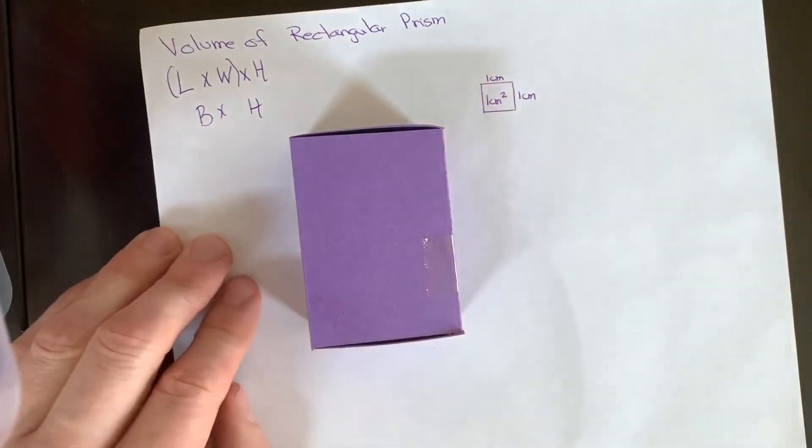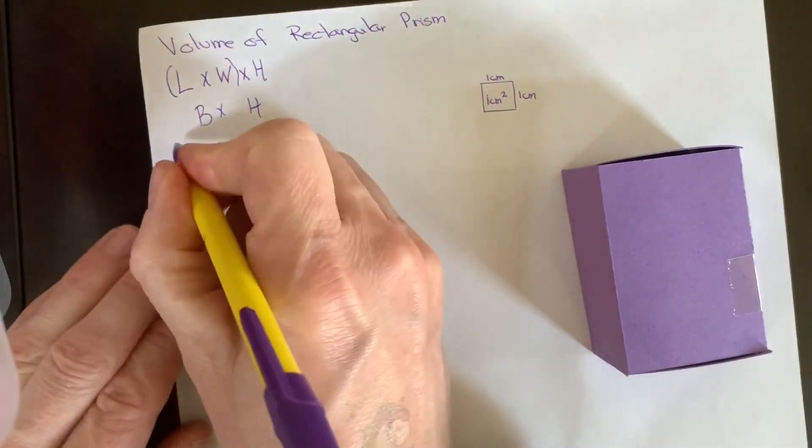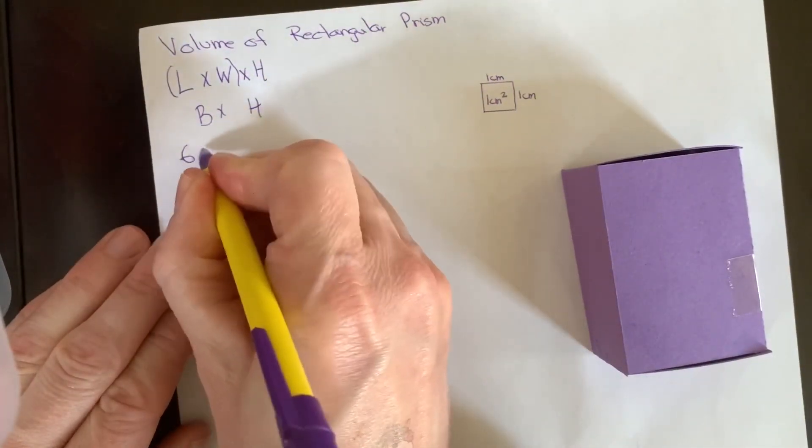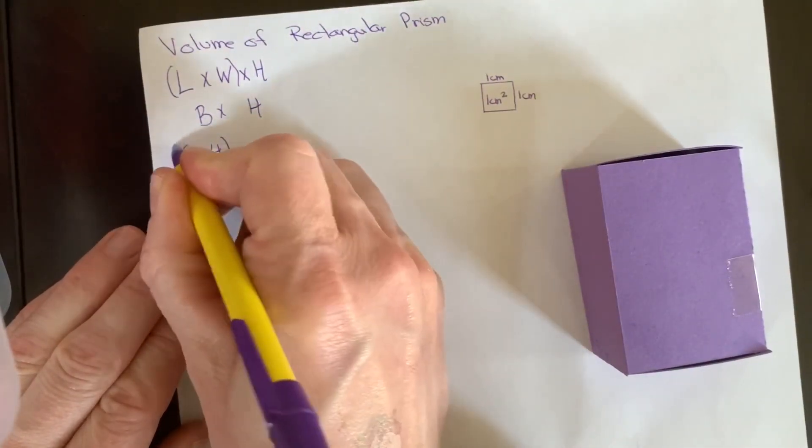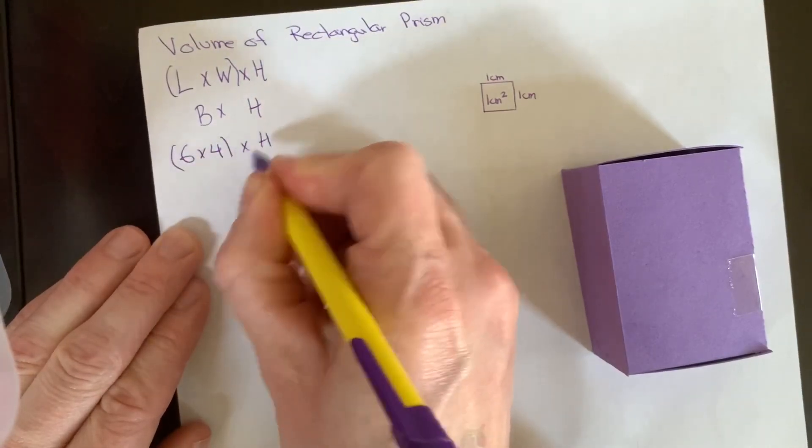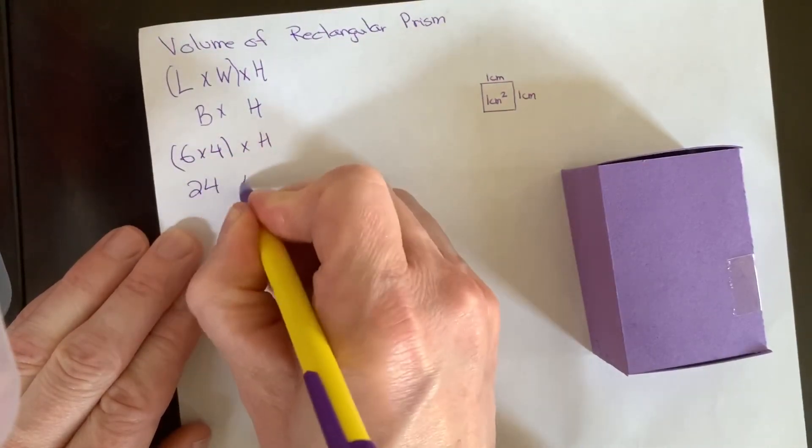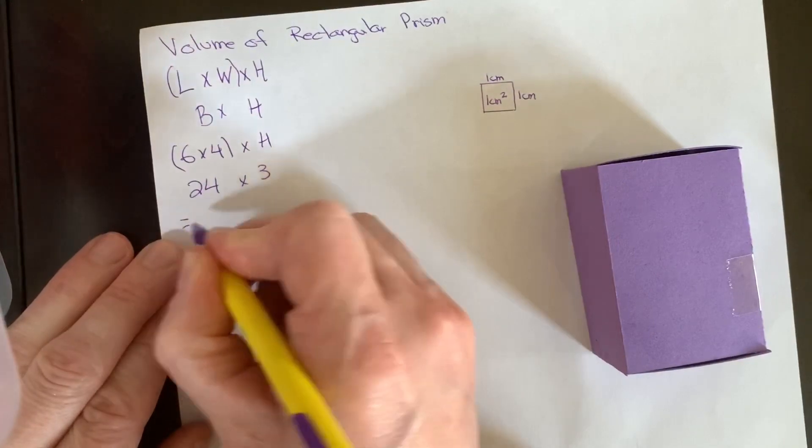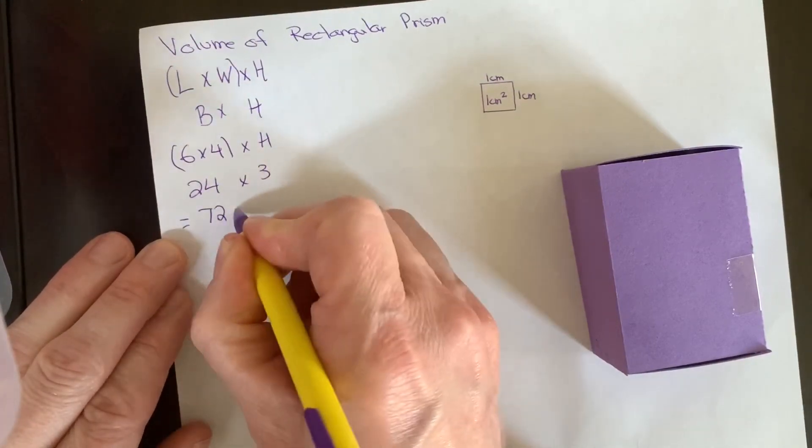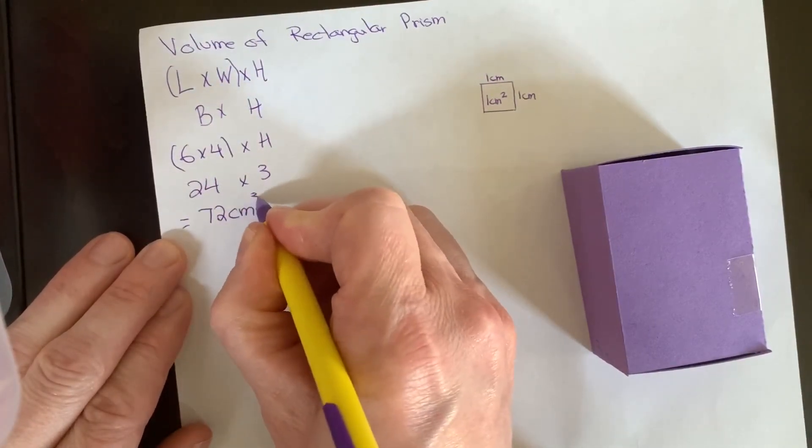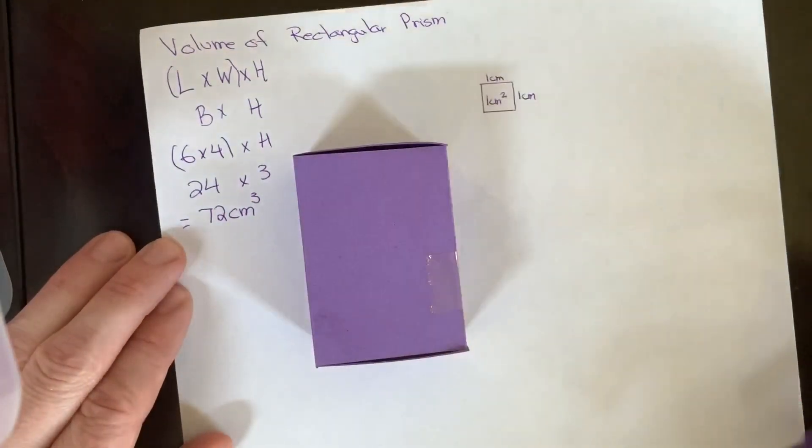And I get a height of 72 centimeters squared. So my units are 72, and this happens to be in centimeters. And I'm going to add my cube because this is three-dimensional.